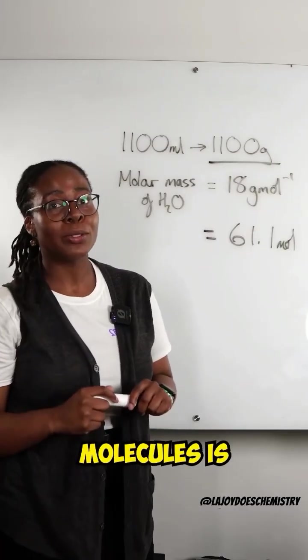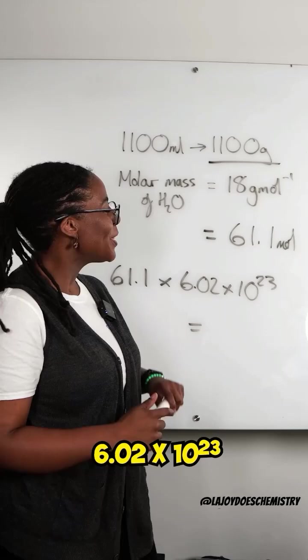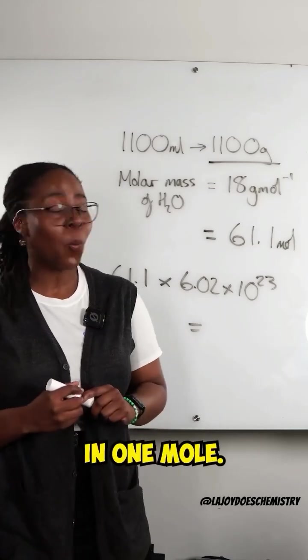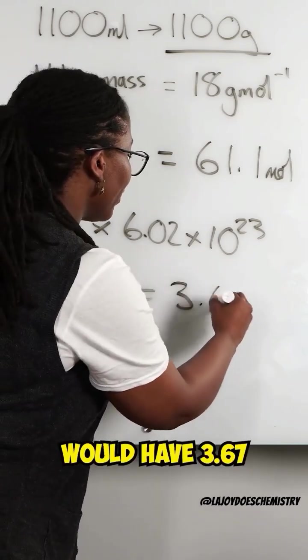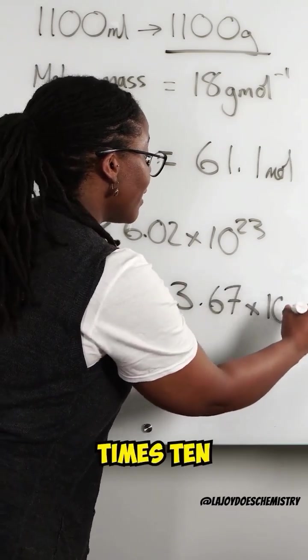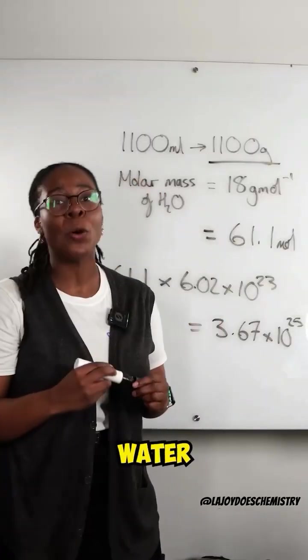So how many molecules is that? We know there are 6.02 times 10 to the 23 particles in one mole. So 61.1 moles would have 3.67 times 10 to the power of 25 water molecules.